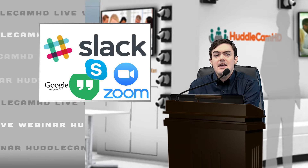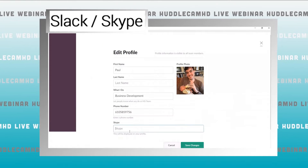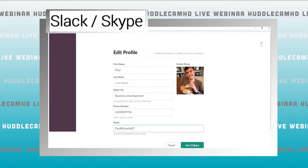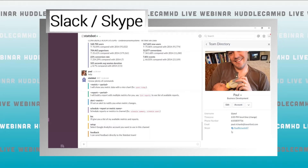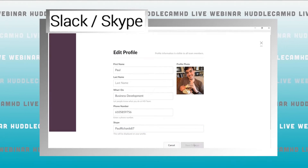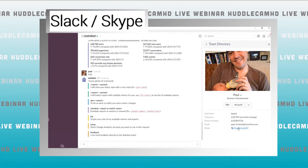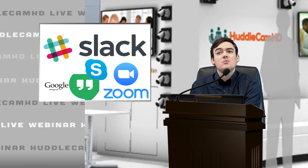Next, let's look at Slack and Skype. Slack has a team directory where you can input your Skype handle into your profile. Once your Skype handle is in your profile, everyone on your team can launch a Skype call just by pulling up your name in Slack. If your team uses Skype, encourage everyone to add their Skype handle so you can launch video and audio calls directly through Slack into Skype.